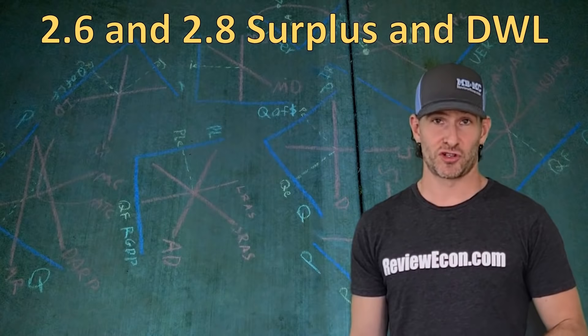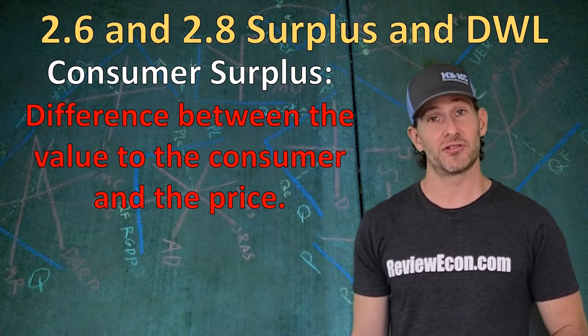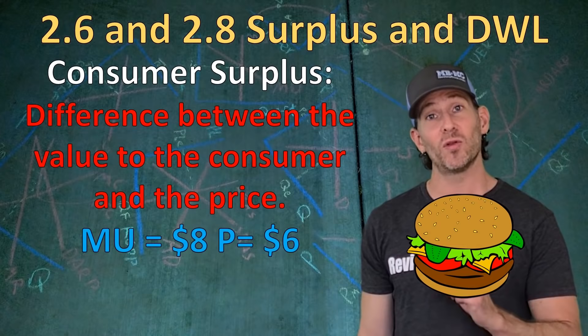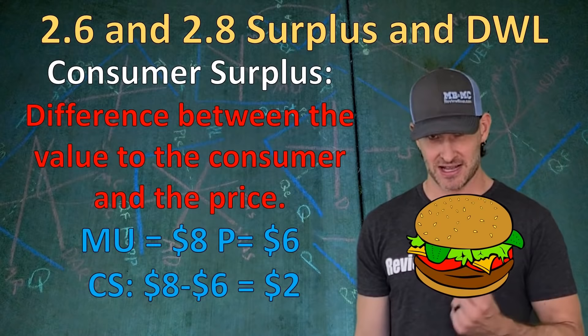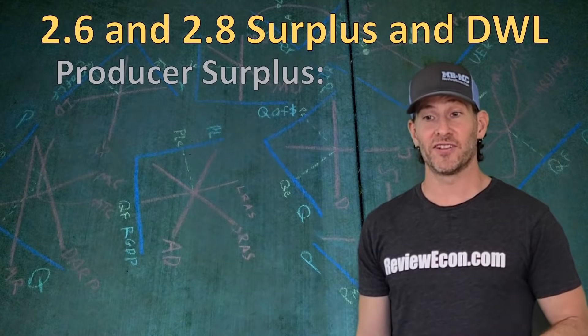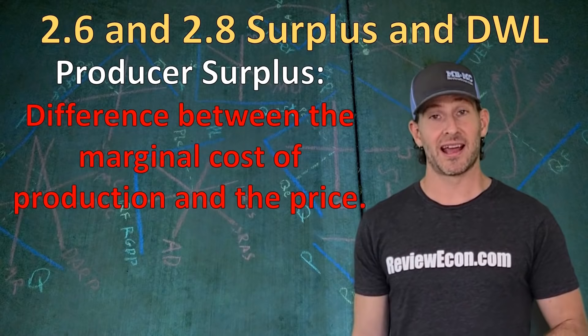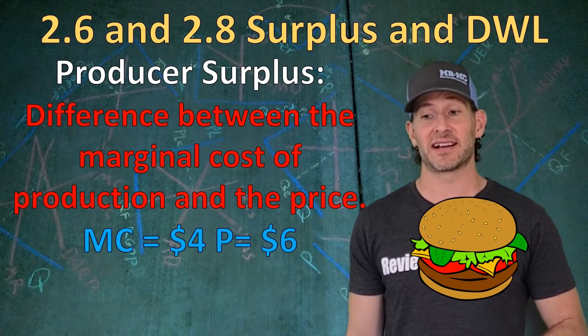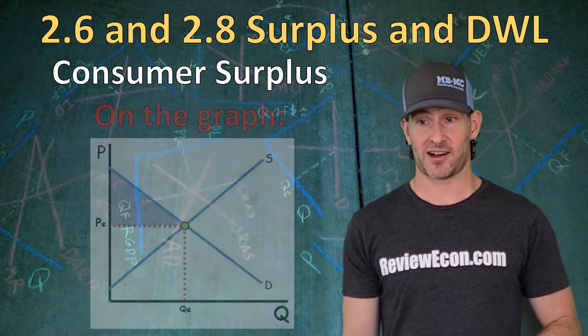Next is consumer surplus. Consumer surplus is the difference between the value to the customer and the price the customer pays. For example, my marginal utility for the next cheeseburger is $8, but if I only pay $6, I have a consumer surplus of $2. On the flip side, we have producer surplus. Producers have the marginal cost of production and the price they charge — the difference is producer surplus. If the marginal cost of a cheeseburger was $4 while the price was $6, the producer has a producer surplus of $2.